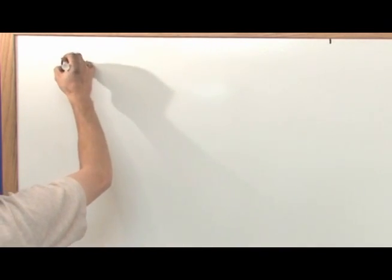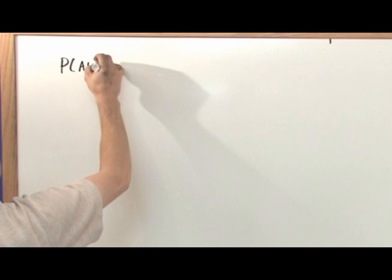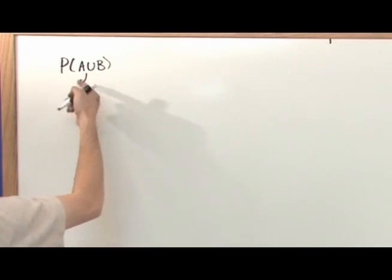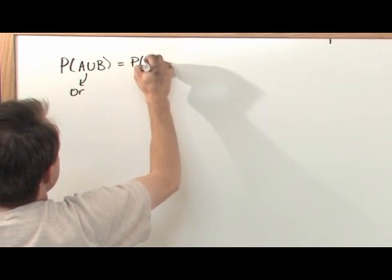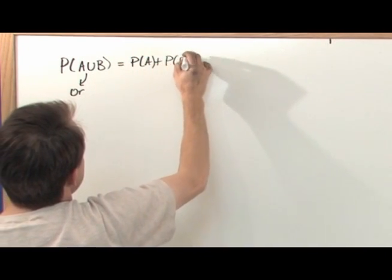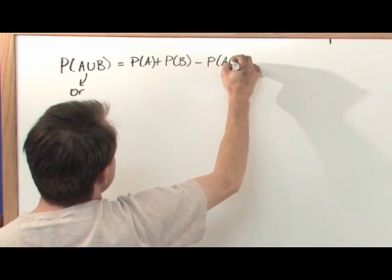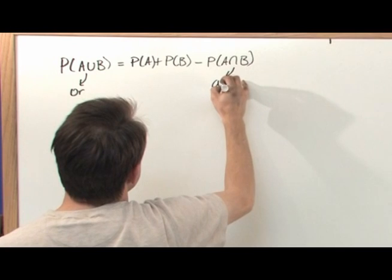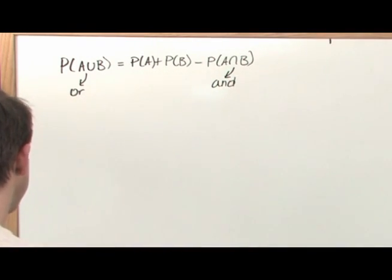In the last section we were talking about the probability of A union with B, which is basically 'A or B or both.' We found out that that was the probability of A plus the probability of B minus the probability of A intersected with B, which is A and B. You can go back to the last section to remind yourself of that.